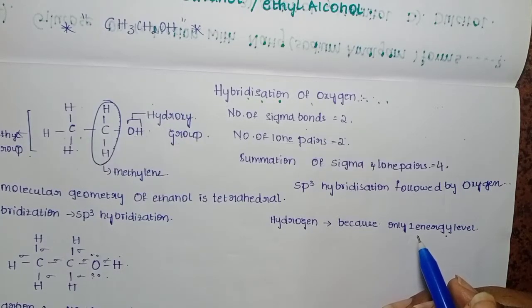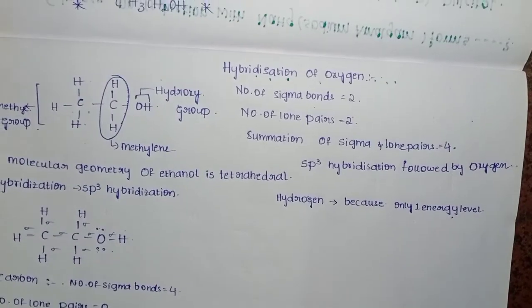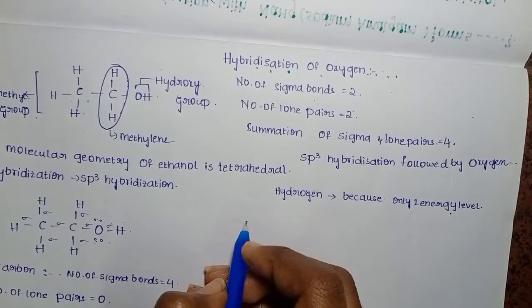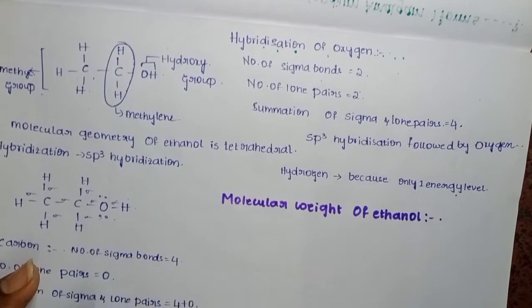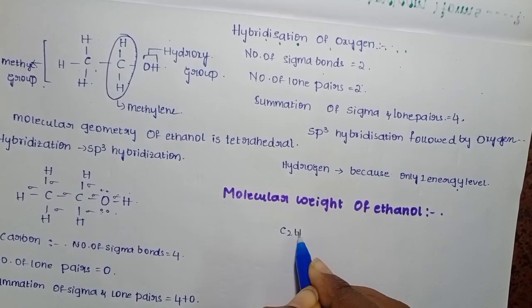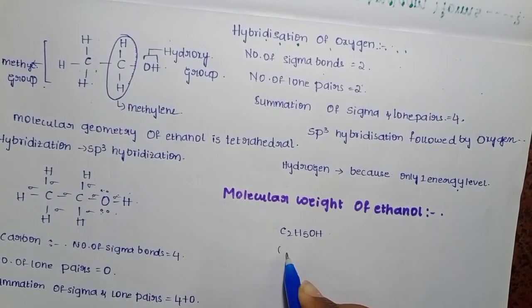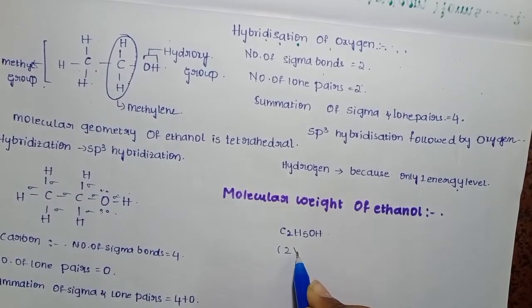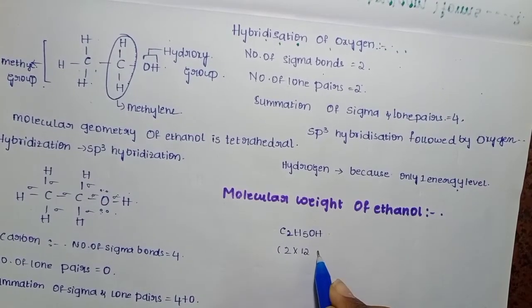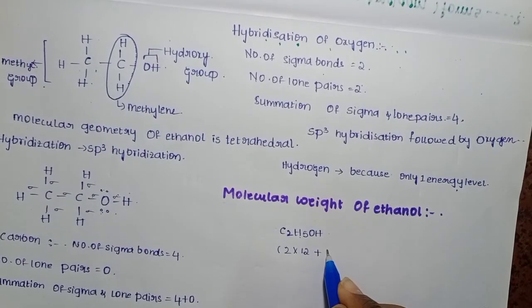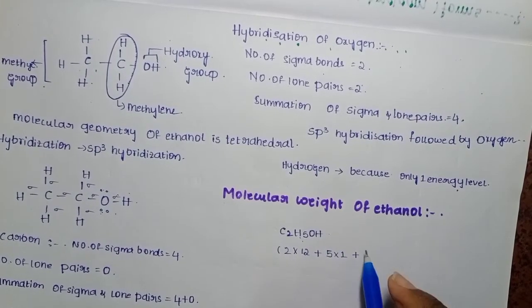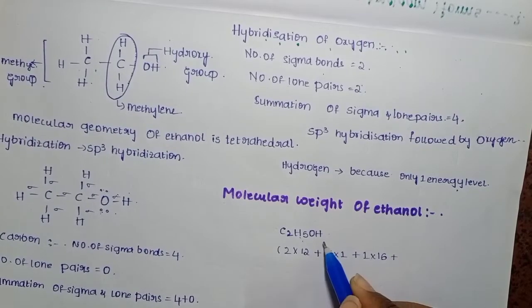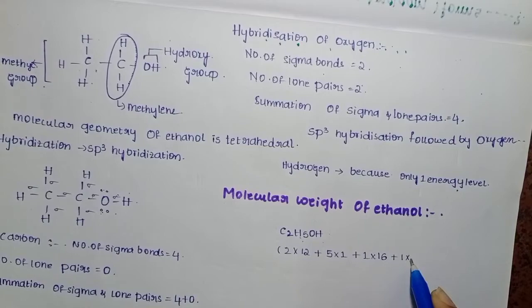We should know what is the molecular weight of ethanol. We will calculate the molecular weight of ethanol: C2H5OH. Carbon is 2 into 12, hydrogen is 5 into 1, oxygen is 1 into 16, hydrogen is 1 into 1. The molecular weight of ethanol is 46.